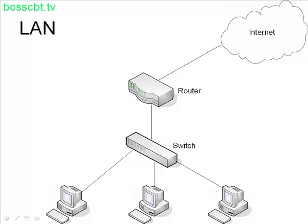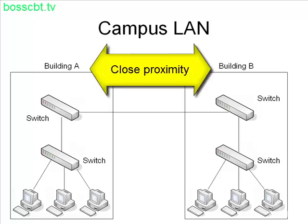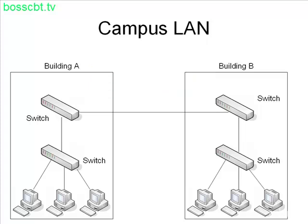There are also campus LANs, and that would look something like this. We have a group of buildings and each building is connected between switches. Ethernet is the primary technology here, but these buildings are relatively close together. Perhaps it's a college campus or an industrial park where buildings are grouped for a particular company, and they all work together on the same network.